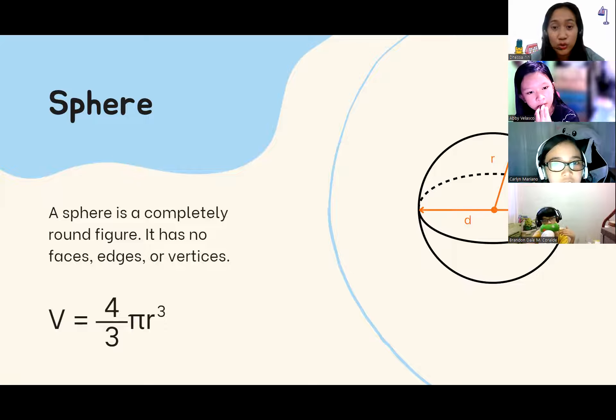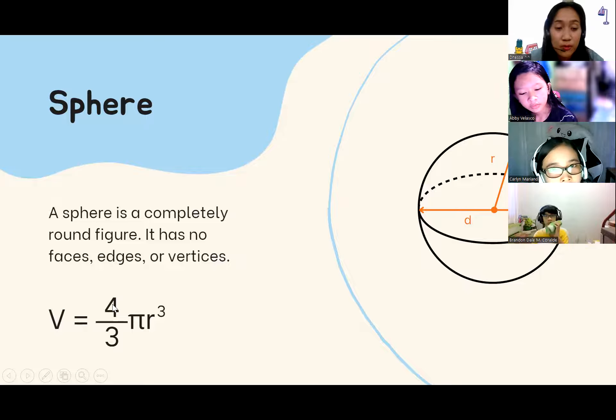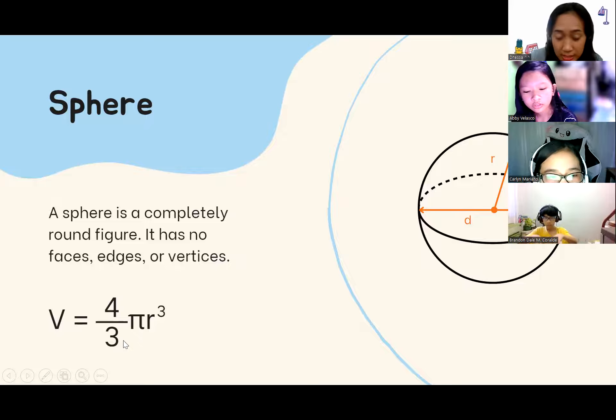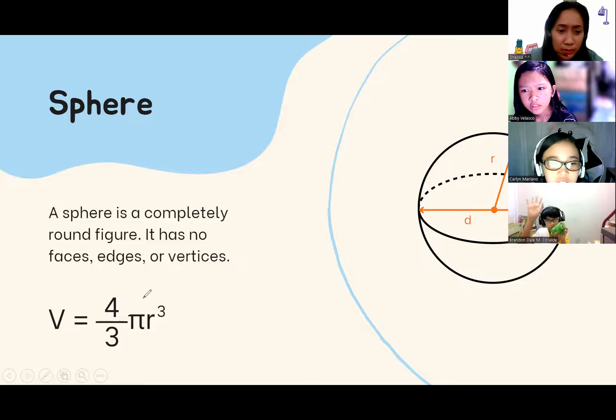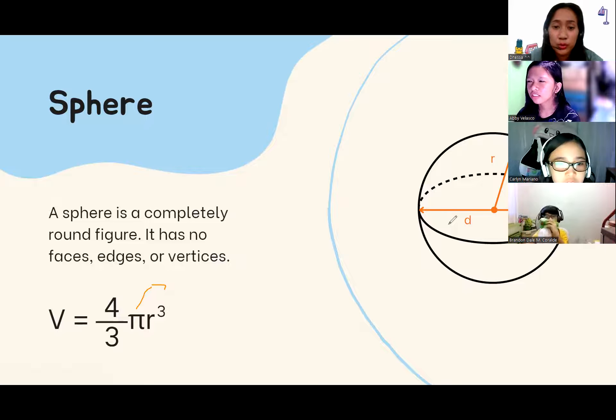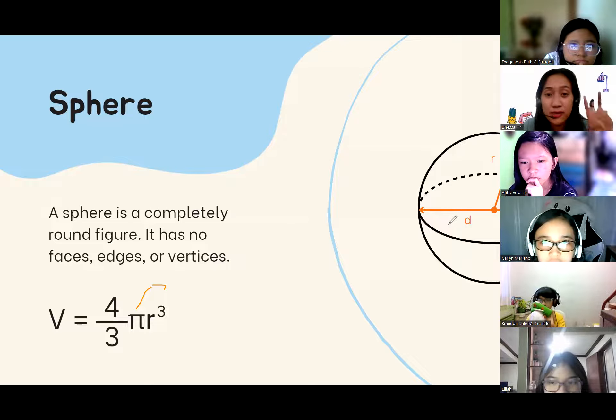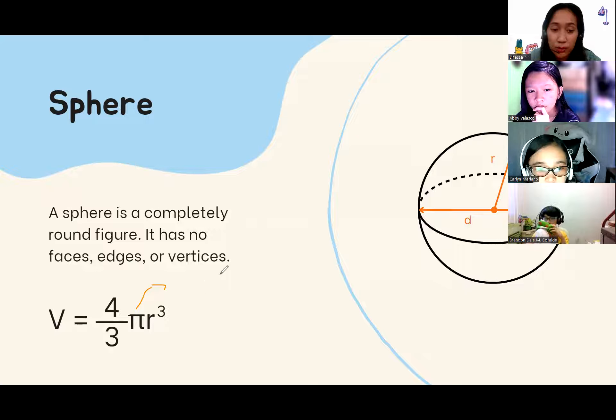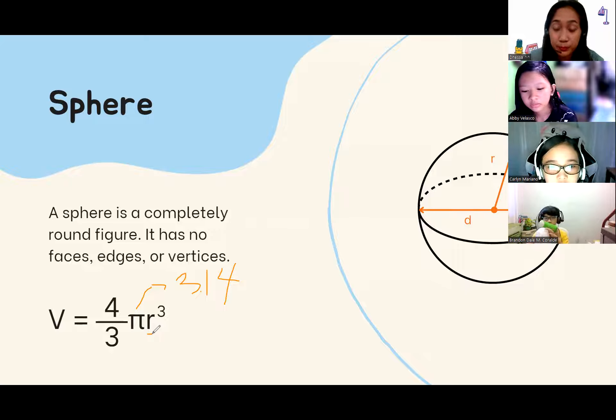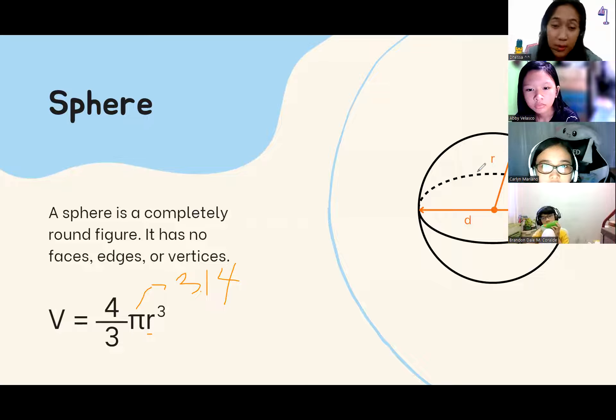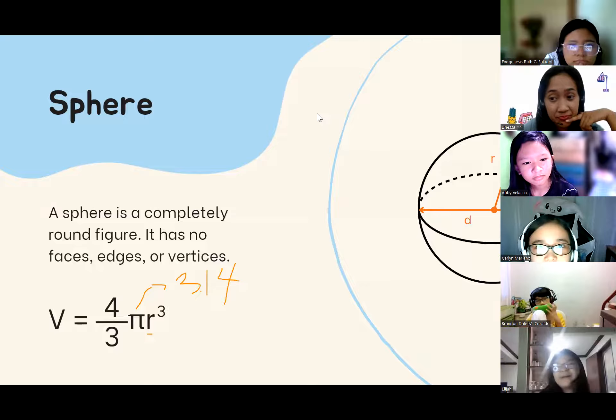So, how do we get the volume? So, you have your V is equal to 4 over 3 or 4 thirds multiplied by the pi. Do you know the value of pi, everyone? You know the value? What's the value? 3.1416. Let's have two decimals only. So, we have 3.14. Okay, very good. And then, what's the R reference to? R is the radius. Who knows about that?